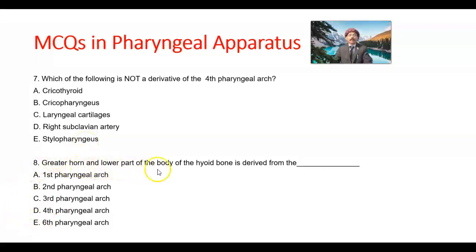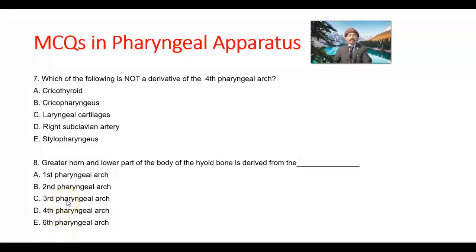Question number 8. The greater horn and lower part of the body of the hyoid bone are derived from which arch? Options: first, second, third, fourth pharyngeal arch, or sixth pharyngeal arch. The answer is the third pharyngeal arch.